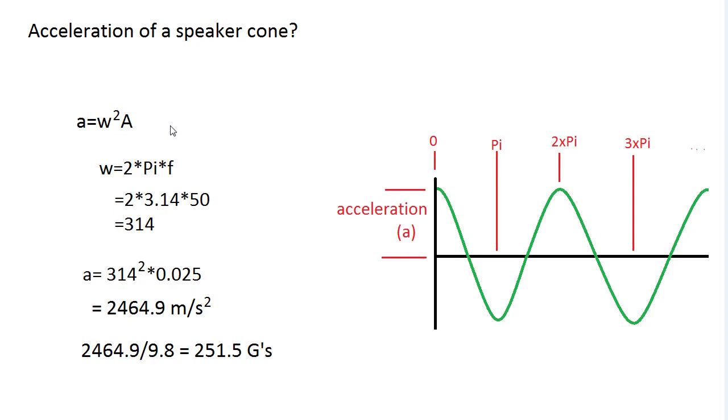So now the equation just becomes W squared A. And we already know all the information. So we already know that the frequency, which is this number here, is 50 hertz. So W, or omega, equals two times pi times the frequency, which is 314, right? That's, I think it's unitless, so you can just say it's 314. And to get the acceleration, it's 314 squared times the amplitude. And once again, the amplitude is its distance from the middle out, or distance from the middle in, which is 0.025 meters.